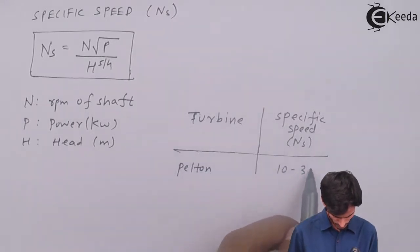Numerical 1: A Pelton wheel has a diameter of 2.5 meters operating under the following conditions — available head: 300 meters, speed: 300 RPM, coefficient of velocity: 0.98, blade friction coefficient: 0.95, blade angle: 165°, jet diameter: 20 cm, mechanical efficiency: 0.95. We need to find the hydraulic efficiency and the specific speed of the turbine.